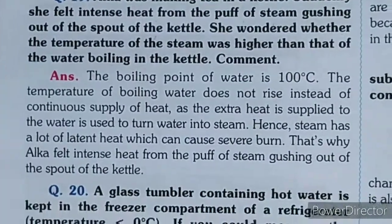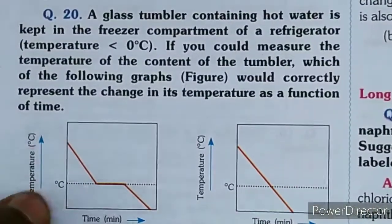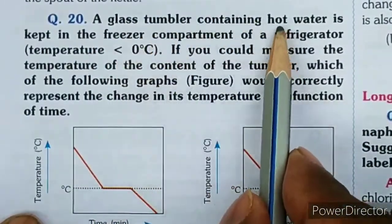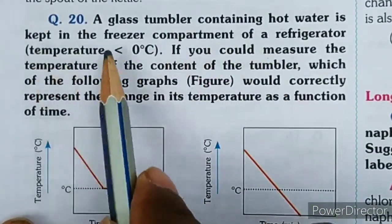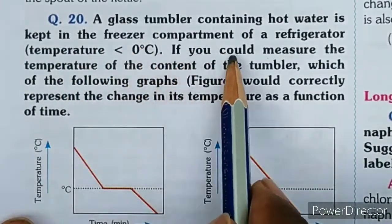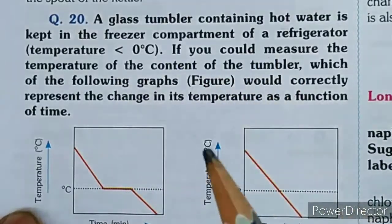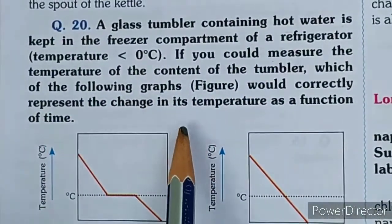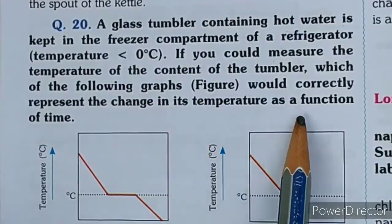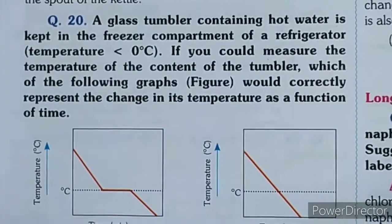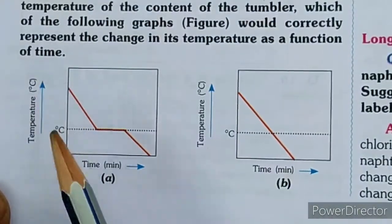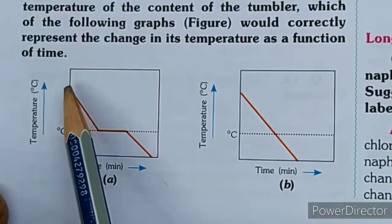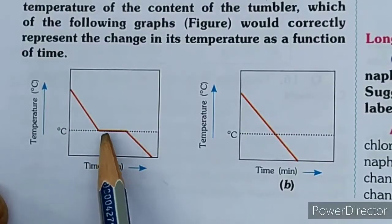Question 20: A glass tumbler containing hot water is kept in the freezer compartment of a refrigerator, which is at temperature less than 0 degrees. Looking at the temperature-time graph options: when placed in the fridge, the temperature will first come down, and continue to lower.